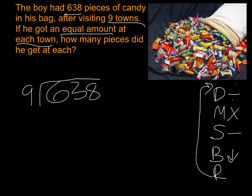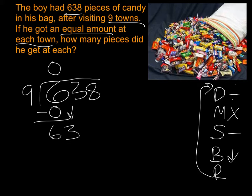Now I ask myself: I'm dividing — how many times can I get 9 into 6? And I can't, because 9 is greater than 6. You could put a 0 here and go through the whole process — 0 times 9 is 0, subtract, bring down, and repeat. Either way, you should still put a 0 there so you remember you're not over the 6 anymore; you're over the 3.